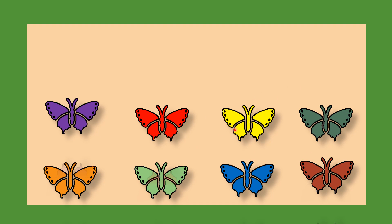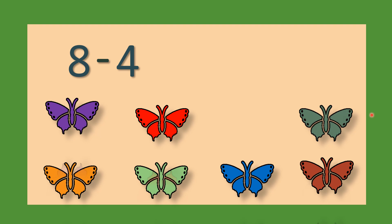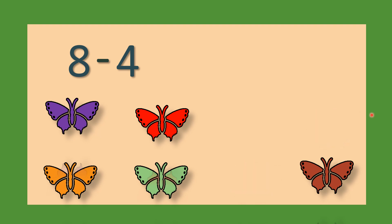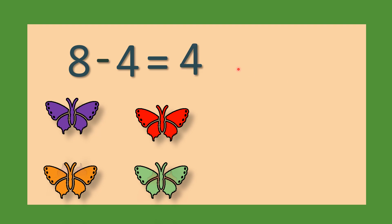Beautiful butterflies are there. Let's count — how many butterflies are there? 1, 2, 3, 4, 5, 6, 7, 8. 8 butterflies are there. So we will write 8 minus 4. Minus 4 means 4 butterflies will go away. 1 butterfly go away, 2 butterfly go away, 3 butterfly go away, 4 butterfly go away. How many butterflies are left? Let's count. 1, 2, 3, 4. 4 butterflies are left. 8 minus 4 equals to 4.